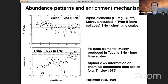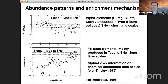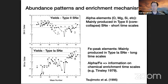In Type II supernovae we get a lot of so-called alpha elements — oxygen, magnesium, silicon, and so on — while in Type Ia supernovae there is a lot of iron-peak elements produced. If you look at the relative proportions of these different kinds of elements in stars, you can learn something about the relative importance of different enrichment mechanisms, and since these mechanisms operate on different timescales, that gives you information about the timescales for chemical enrichment.